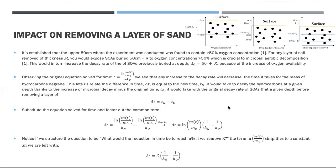But notice if we structure the question to be, what would the reduction in time be to remove a certain percentage of sand? When we plug in that percentage, the term natural log of mass over initial mass will simplify to a constant, and we're left with the simple expression that the change in time is equal to some constant times 1 over the new decay rate minus 1 over the original decay rate.